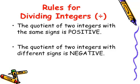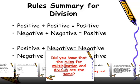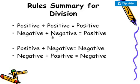Summary for division: positive divided by positive is positive; negative divided by negative is positive. Positive divided by negative is negative, just as in multiplication positive times negative equals negative. Negative divided by positive is also negative — the same rule applies as in multiplication.